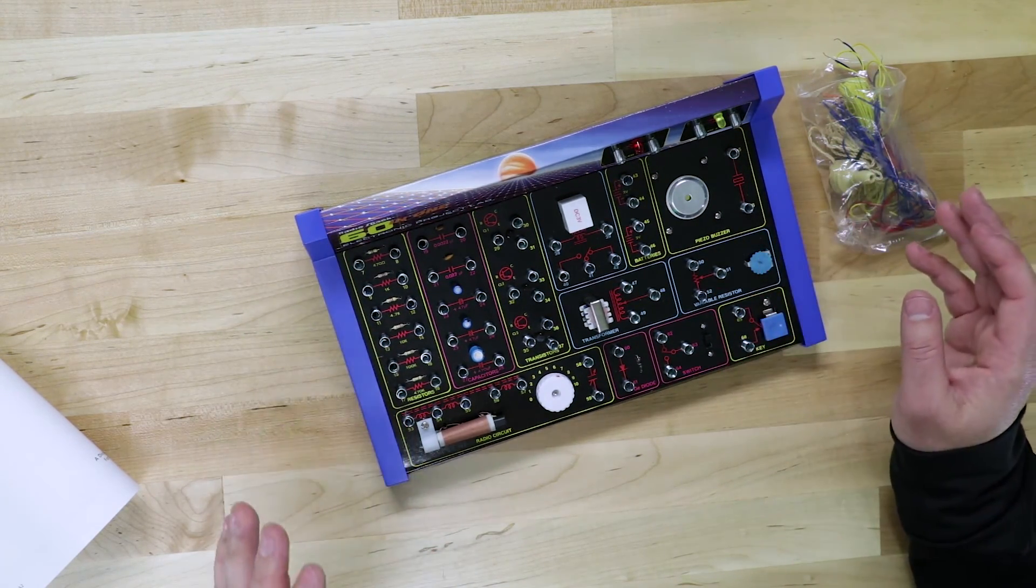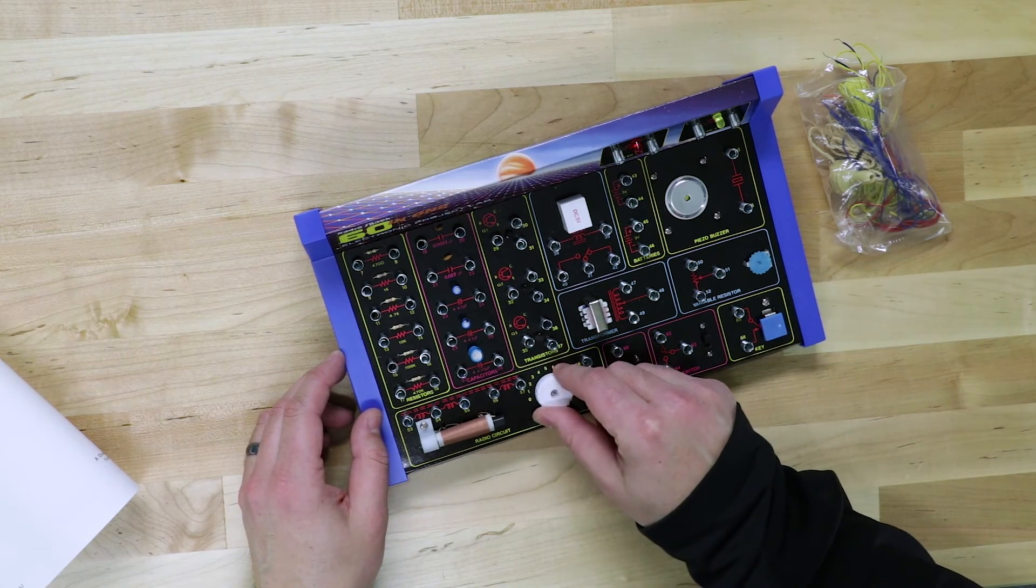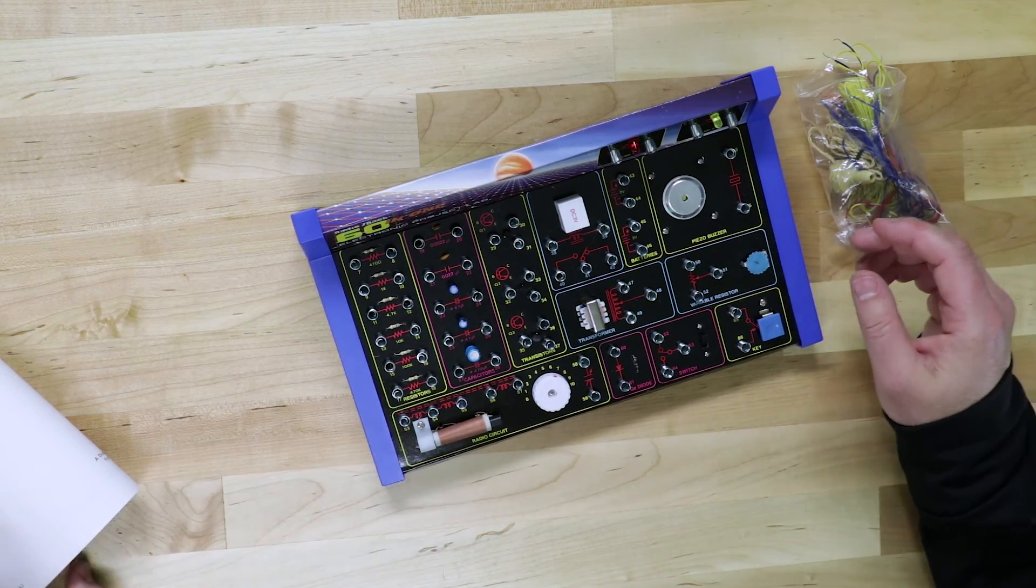We've got resistors down the side. We've got diodes. We've got just radio circuits. We've got all sorts of stuff on here, relays, buzzers, and you can create cool little projects.